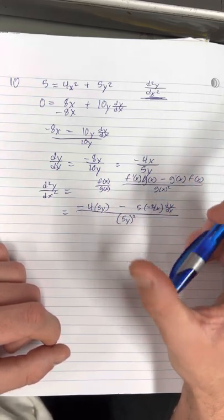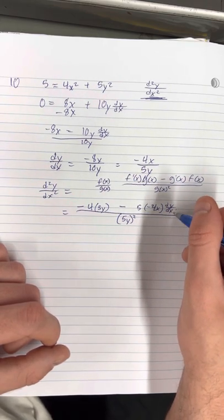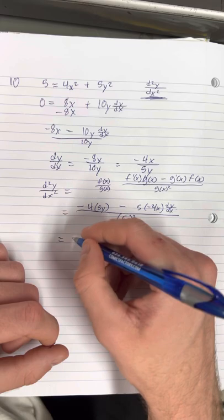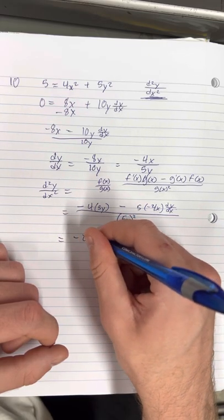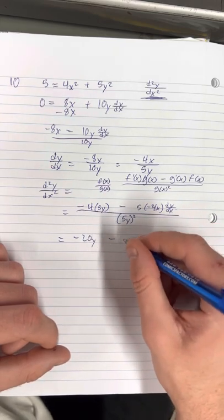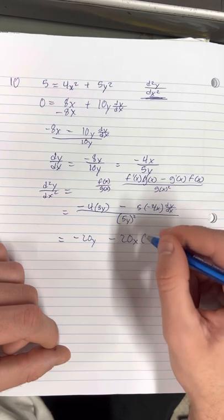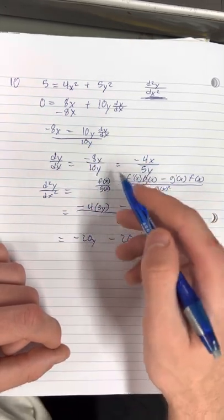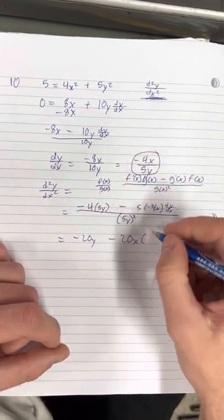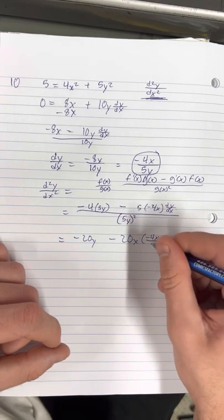Now we're going to continue. The next thing we should do is plug in dy/dx, so we're just going to rewrite that. We get negative 20y—simplifying since negative 4 times 5 is negative 20—and then minus 20x times dy/dx. dy/dx is written above; it's going to be equal to that, so negative 4x over 5y.